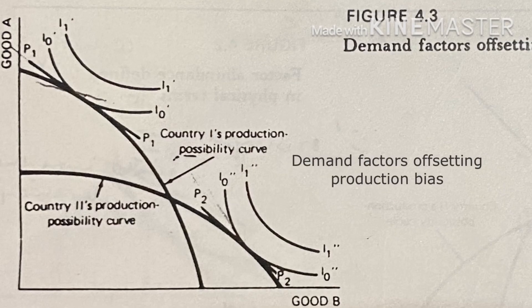However, it does not follow from this that the labor-rich country will export the labor-intensive good. It might be the case that demand-side factors more than offset the bias from the production side. Such a case can be illustrated with a figure showing the same production possibility curves, where good A is still the capital-intensive good and good B is the labor-intensive good, but now demand is taken into account.